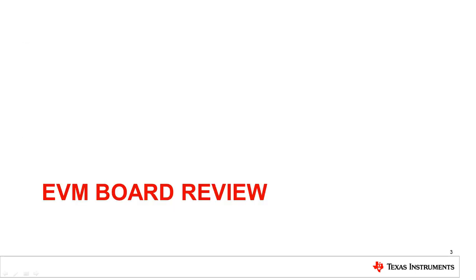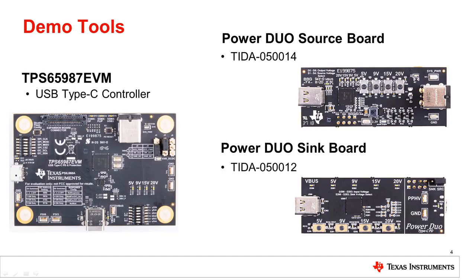First we will discuss the hardware used in this tutorial. For this demo we will be using a USB-C PD laptop, a TPS65987 EVM, the Power Duo source and sink evaluation module, and power and connection cables. For the rest of the video I will be calling the TPS65987 EVM the EVM, the Power Duo source board as the source board, and the Power Duo sink board as the sink board.